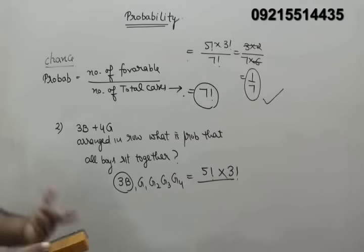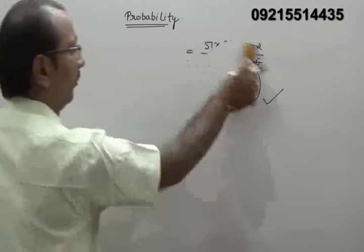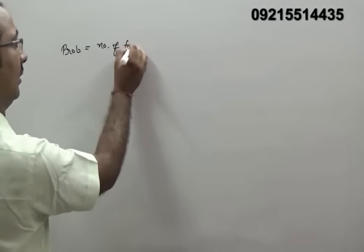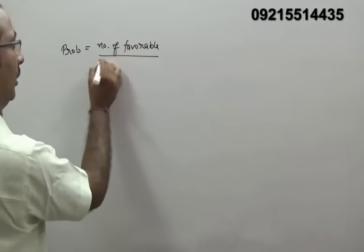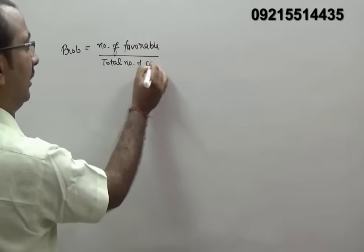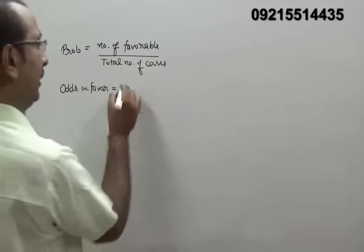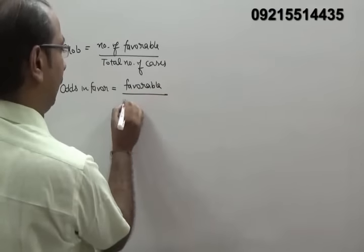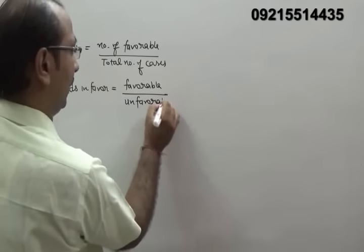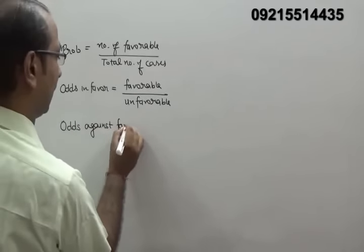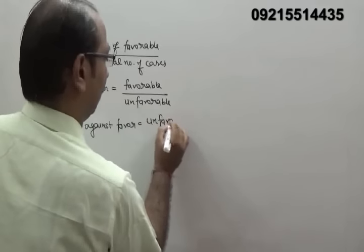The basic formula of probability — number of favorable cases by total cases — requires us to use permutation and combination for both. Now here we use 3 terms. First: probability = favorable cases / total cases. Second: odds in favor = favorable cases / unfavorable cases. Third: odds against favor = unfavorable cases / favorable cases.